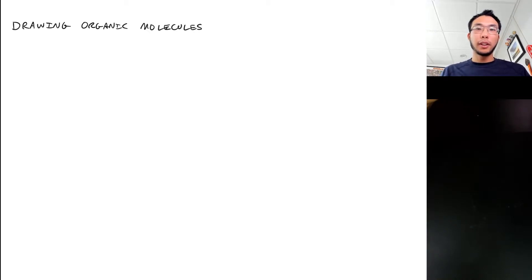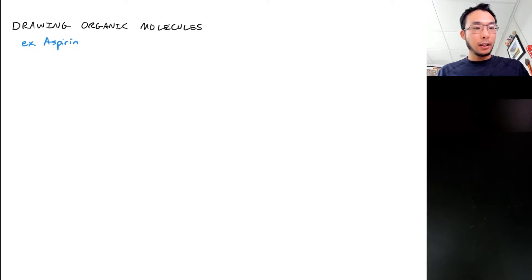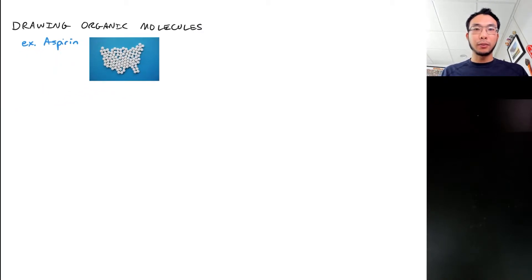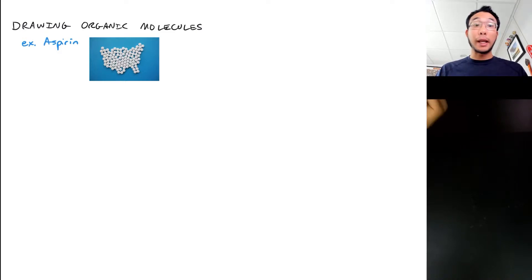In this video we're going to learn about how to draw organic molecules in a way that's effective and quick. We'll do that by starting with a molecule of aspirin. Aspirin is one of the most widely used painkillers in the world, so it's really important that we know what its structure is, because we need to be able to understand how its structure interacts with the human body to reduce pain.